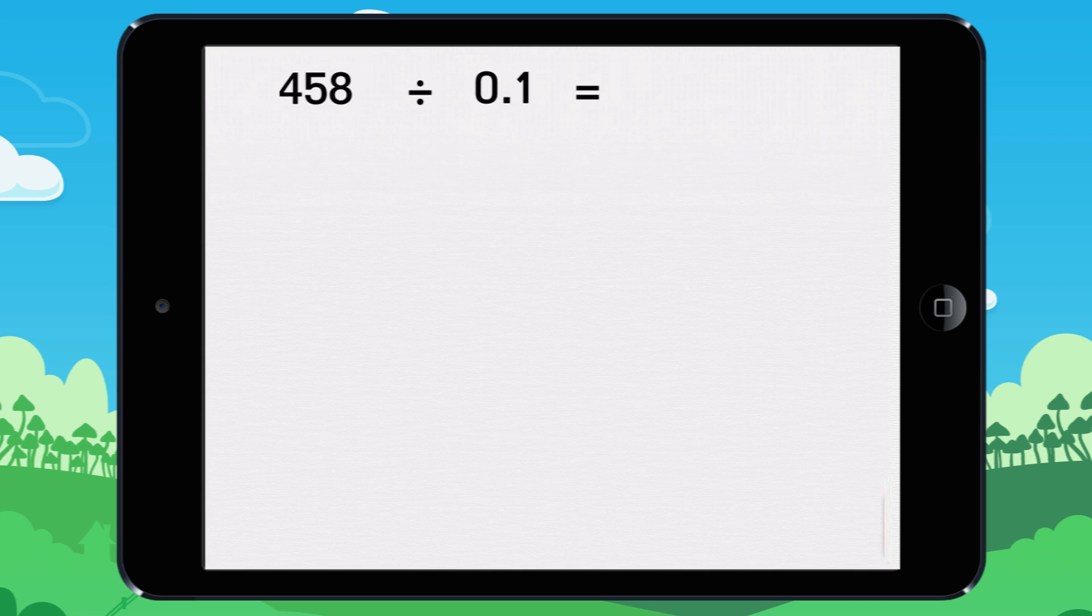To divide a number by 0.1, do the same thing as you did to multiply by 10. Add one zero at the end of the number. 458 divided by 0.1 equals 4,580.